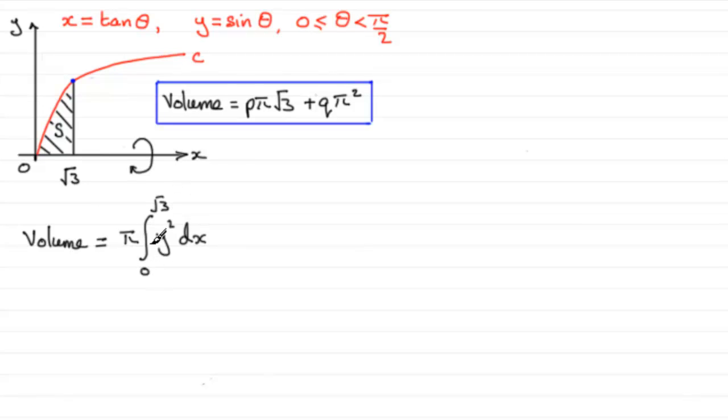So that's our volume of revolution, how we're going to calculate it. Now if we start to substitute some values in, we've got pi times the integral of y squared. Y squared, well y is sine theta, so y squared is going to be sine squared theta.